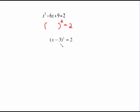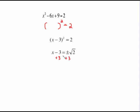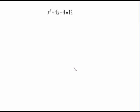We're at the point where we can take the square root of both sides. The square root of x minus 3 squared is just x minus 3. When you take the square root of 2, it just stays the square root of 2, but we have the plus or minus in front. Undo this by adding 3 to both sides, which gives you a final answer of 3 plus or minus the square root of 2.